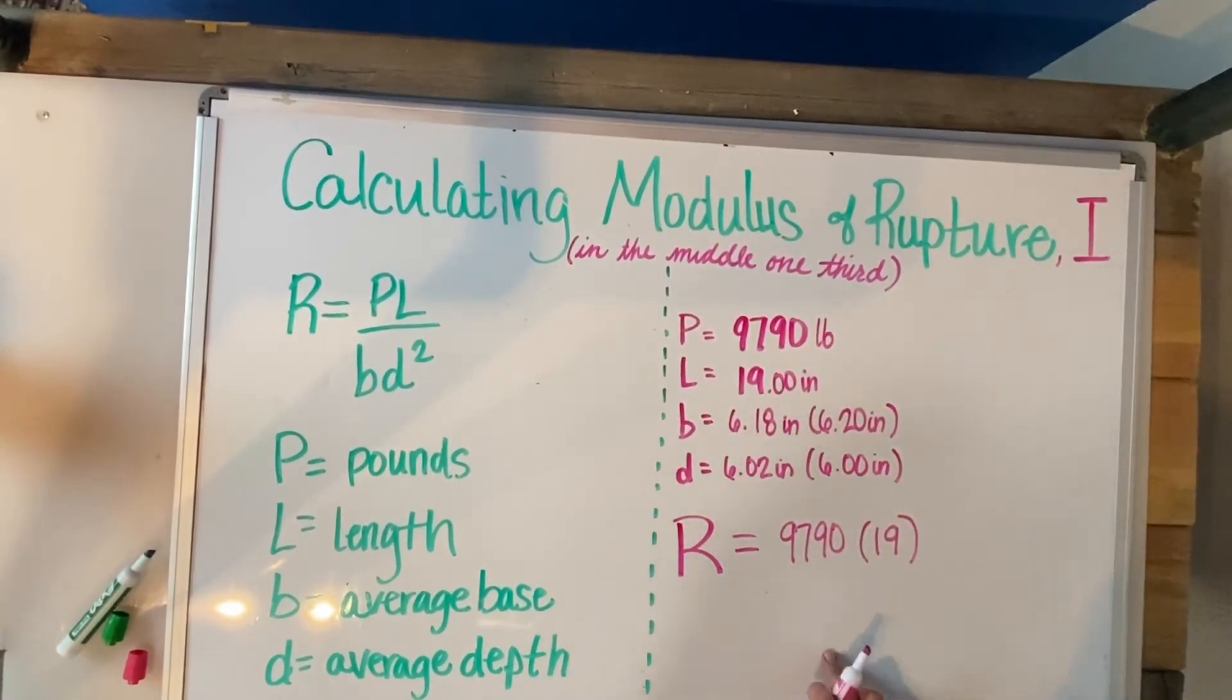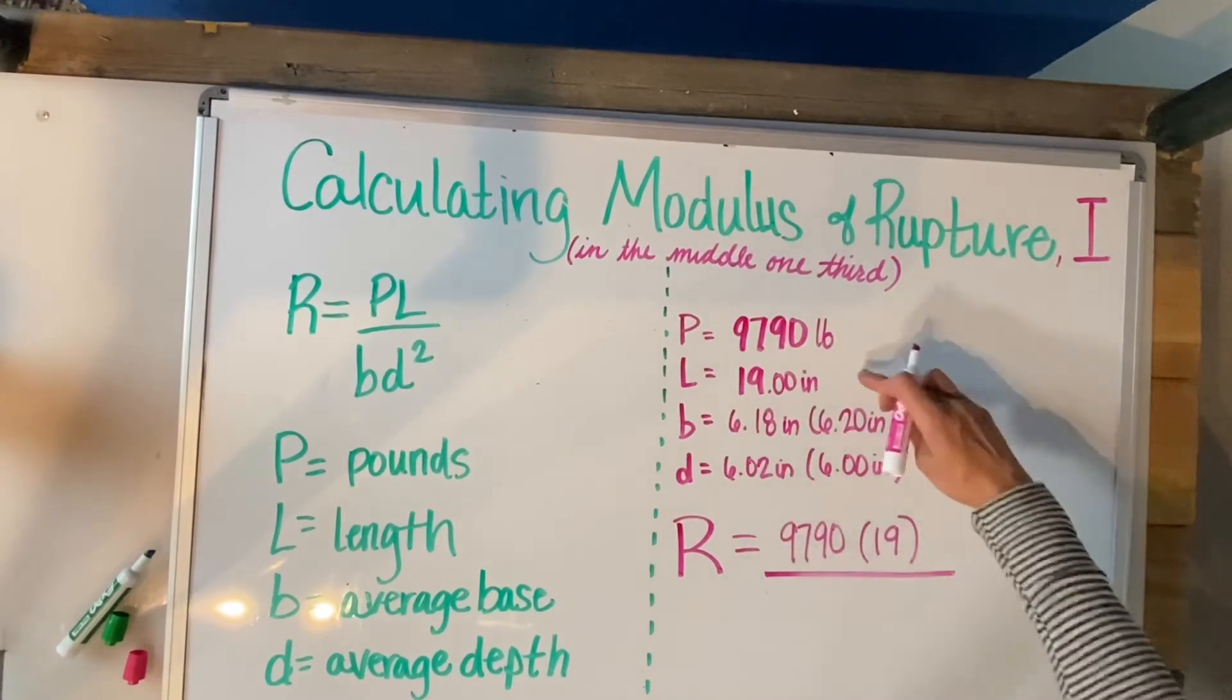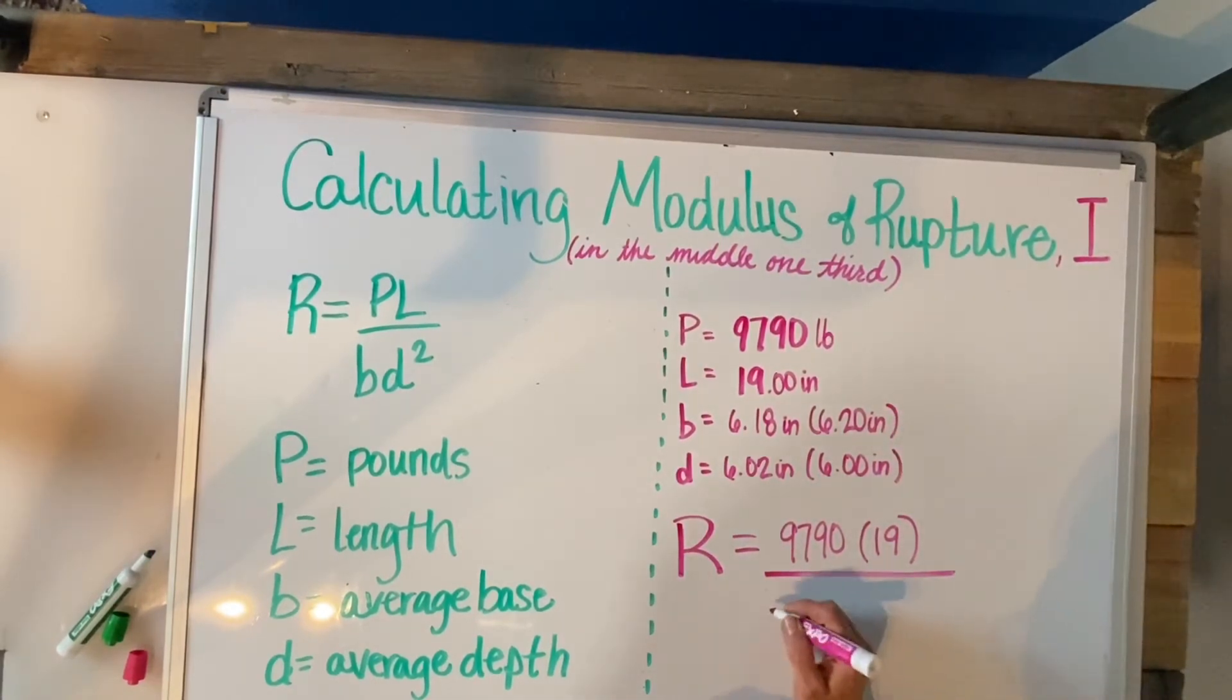So we are going to go ahead and do our calculation. I got started here with P being that 9790 times L of 19, and then BD is going to be 6.20.